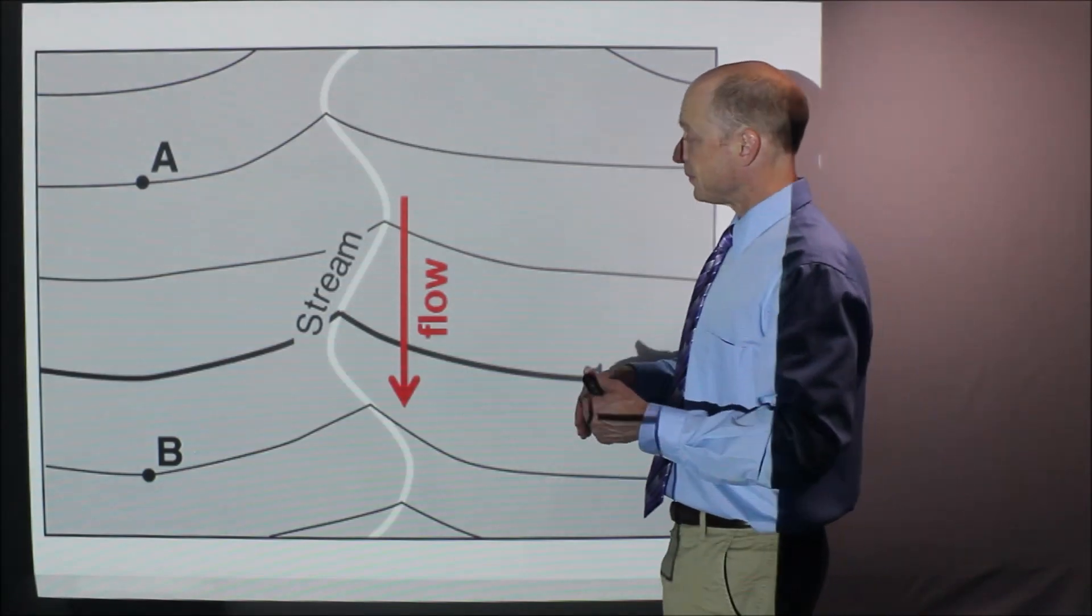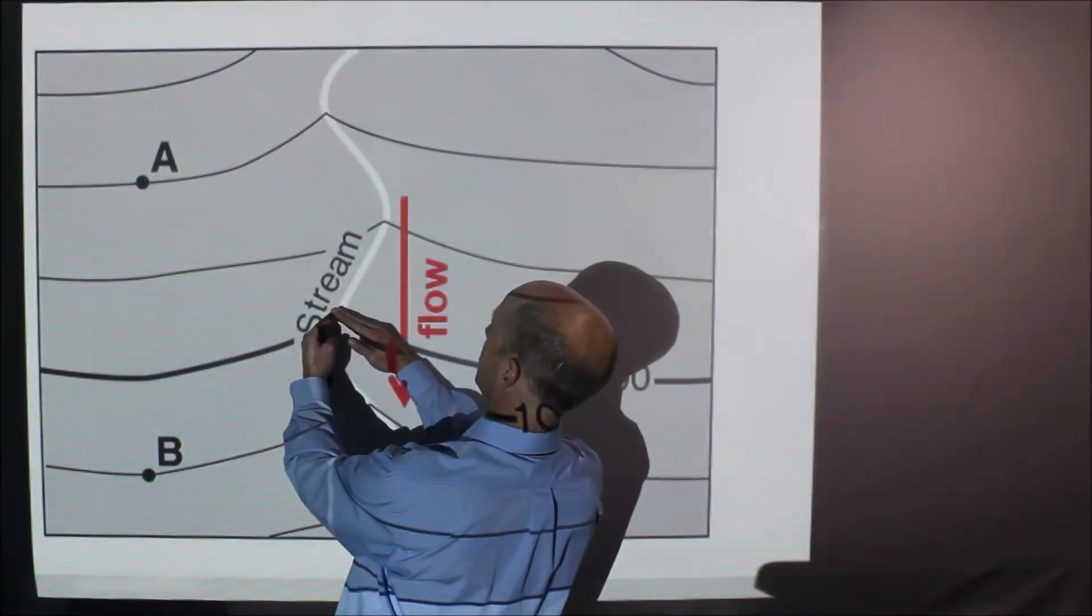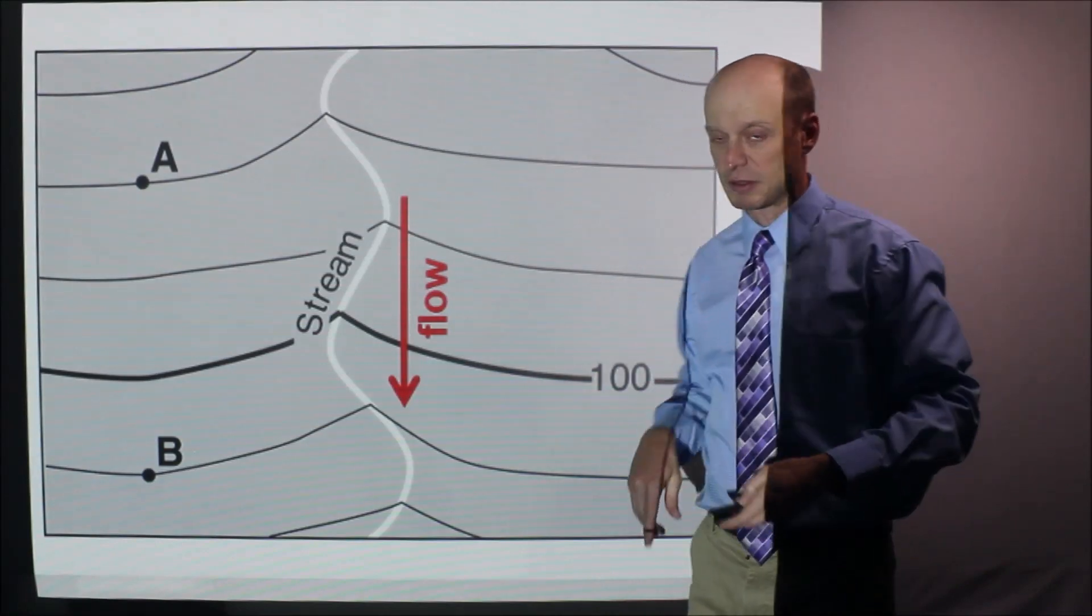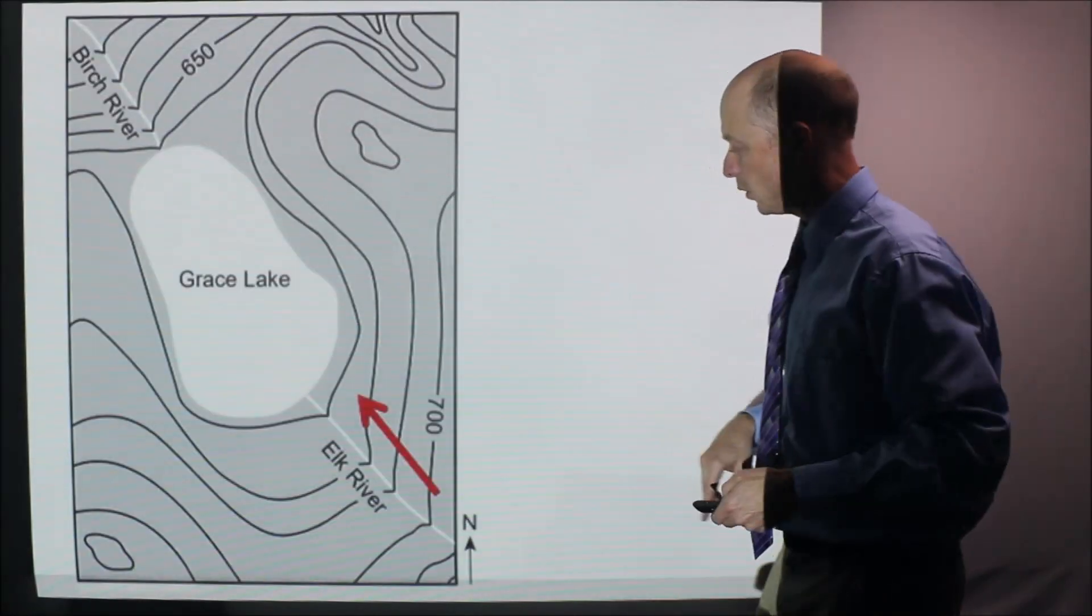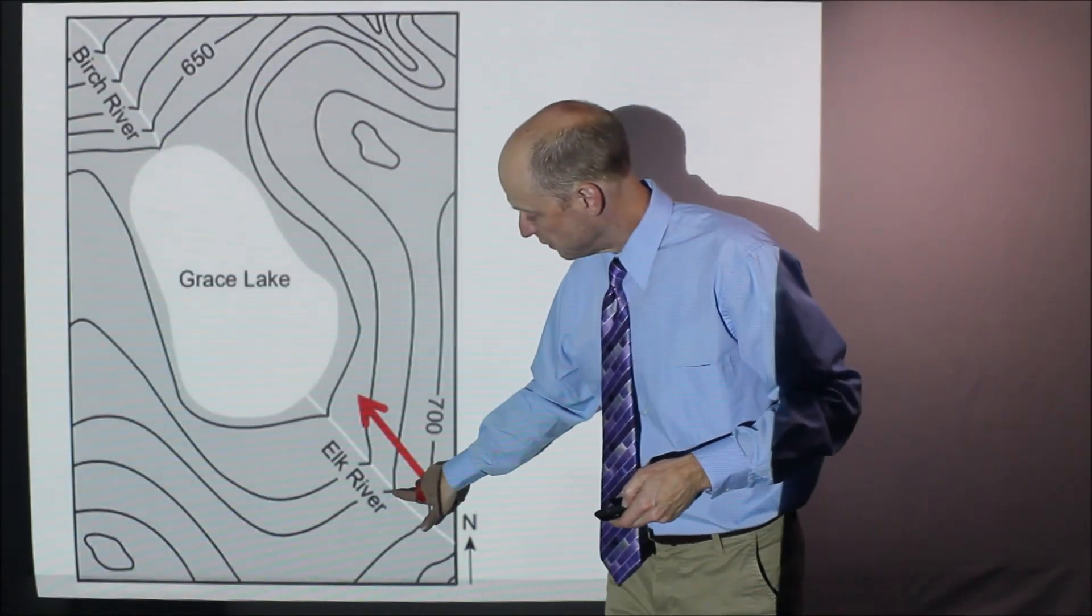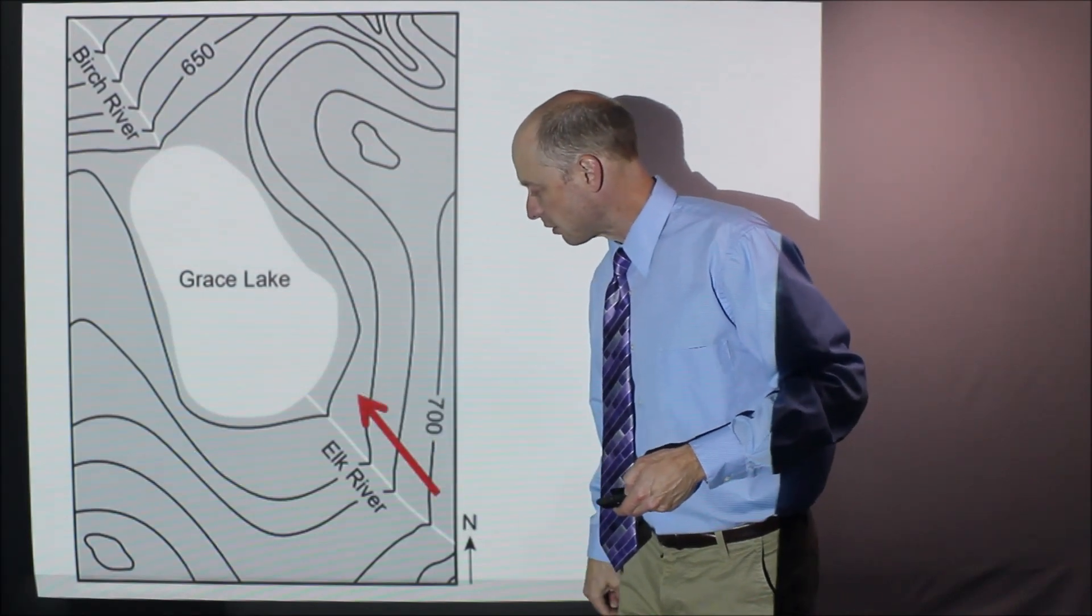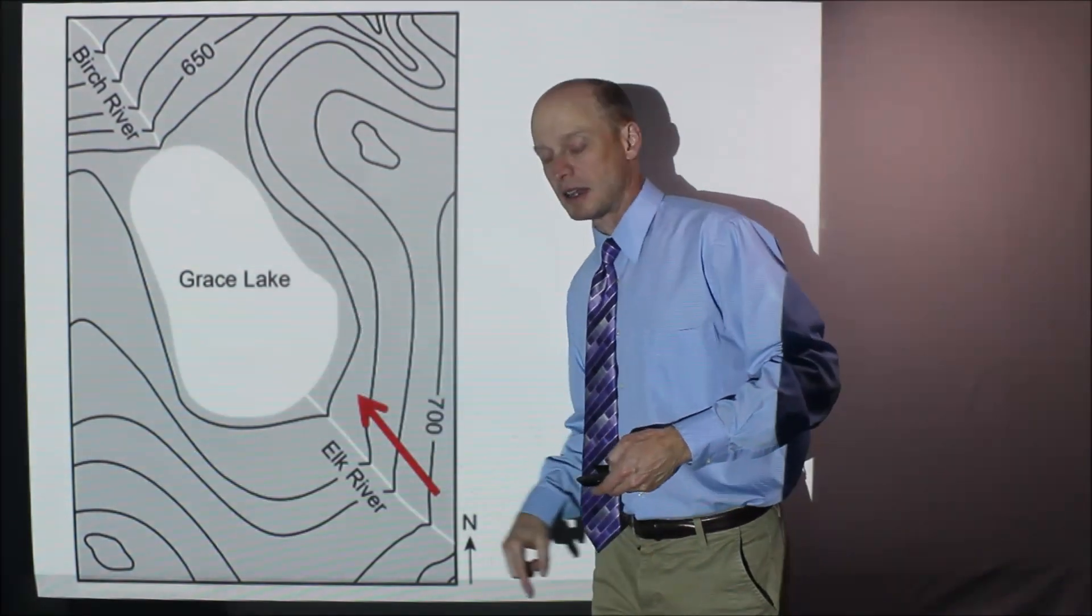In this case, and now we can see there's V's here and V and V and therefore that's the direction the stream flow. Know it. We have another one. Look at the V's here are pointed this way and the Elk River is flowing that way into Grace Lake.